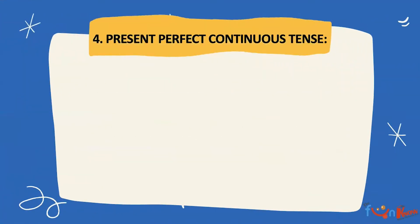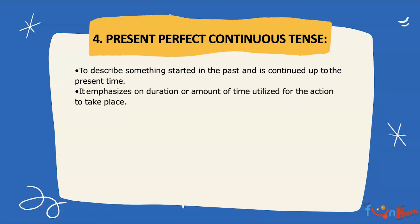Now the last and the fourth type of present tense is present perfect continuous tense. It is used to describe something started in the past and continued up to the present time. It emphasizes on duration or amount of time utilized for the action to take place.